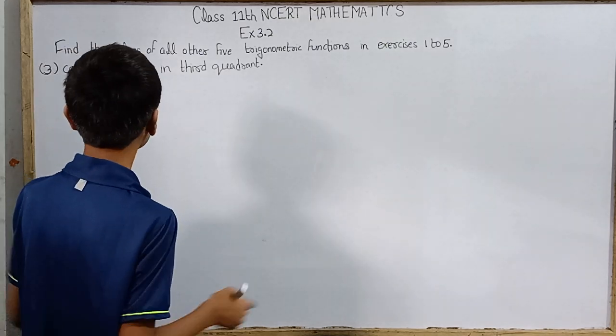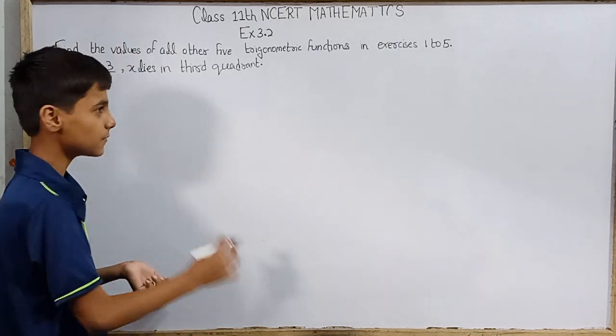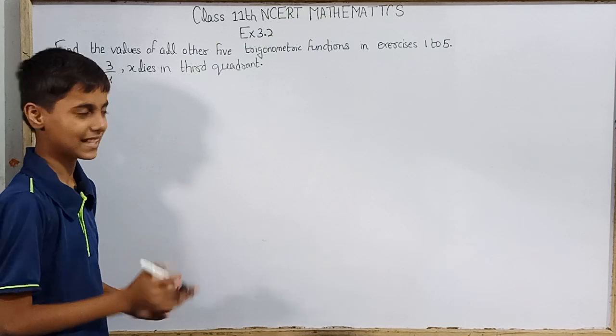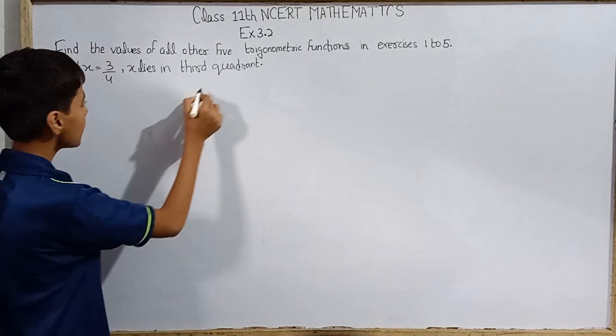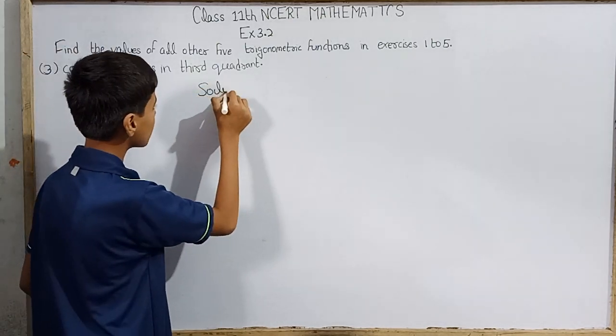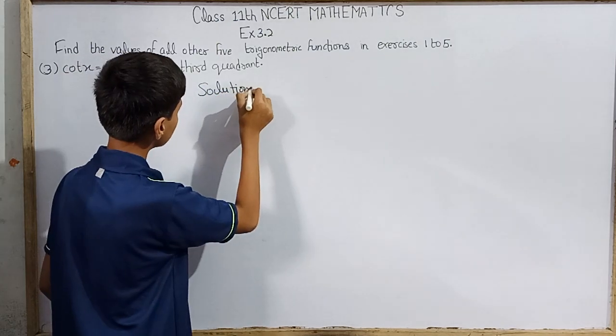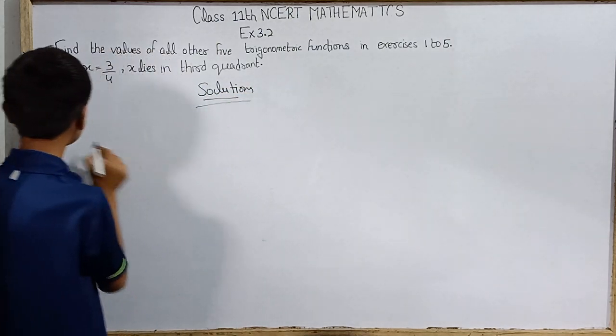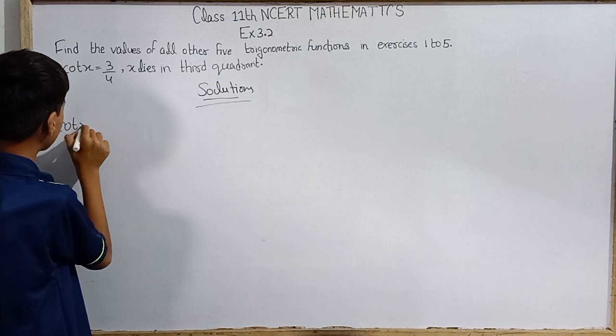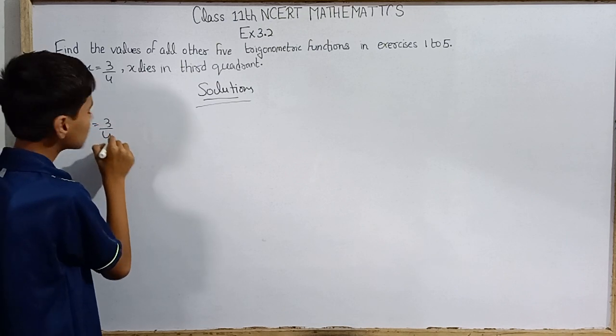We will do the third question, and the fourth and fifth will be combined in the next video. So here is the method - we have to solve using the same method. What is different here is that a function of cot(x) is given, which is 3/4.